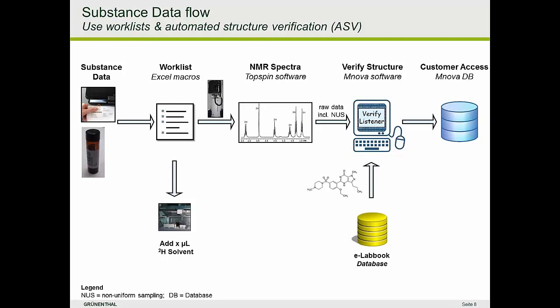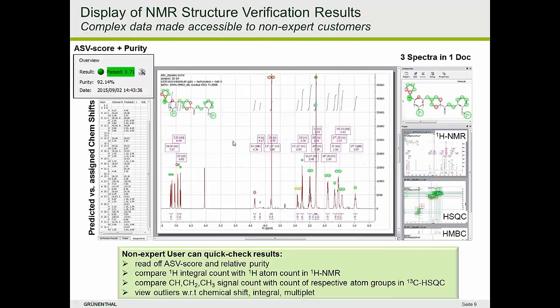Let's have a look at how these data look. For each substance, I get one document in the Mnova software that contains the chemical structure, the unique sample name, further sample information such as the colleague who submitted the sample, the solvent, and other data carried along, as well as the set of NMR spectra recorded for that sample.